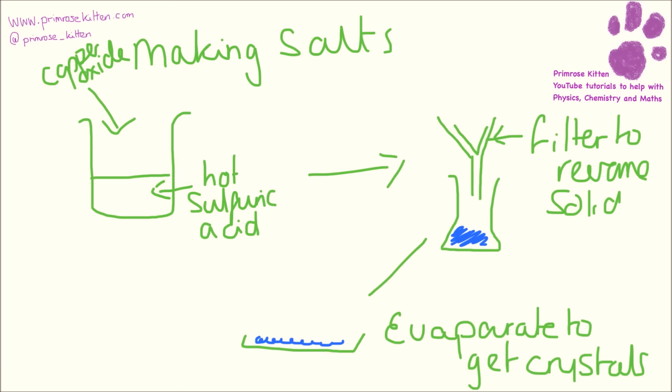They love asking about practicals, not only the rates of reaction practicals but also making salt. So here we have some hot sulfuric acid. We've added in copper oxide and stirred this until the black powder won't dissolve anymore. We need to filter it to get rid of all the black powder — that'll go in here and we will get a lovely blue solution come down. Then what we need to do is to evaporate all of the water off so that we end up with our copper sulfate crystals.